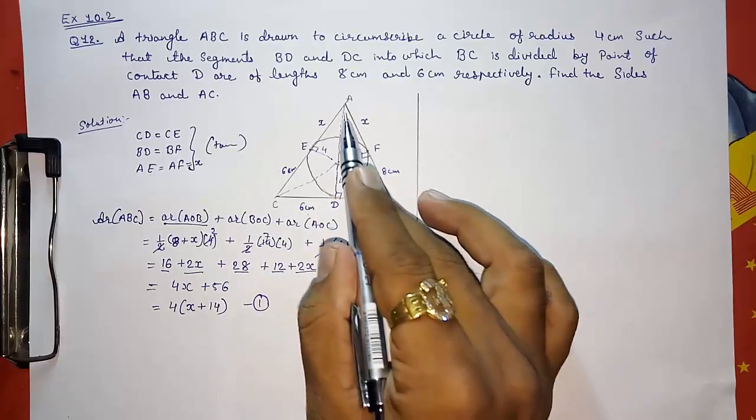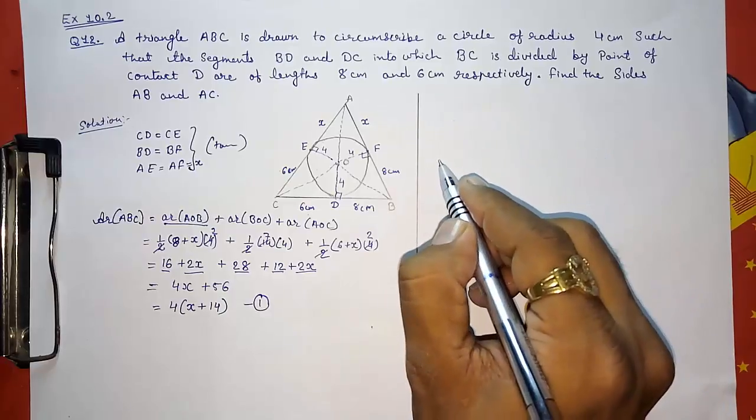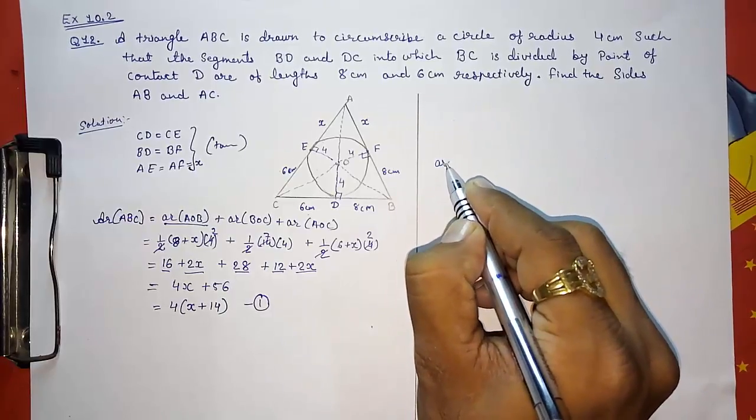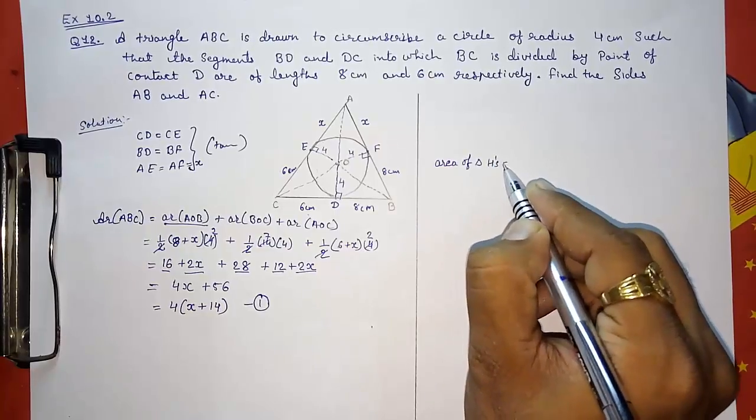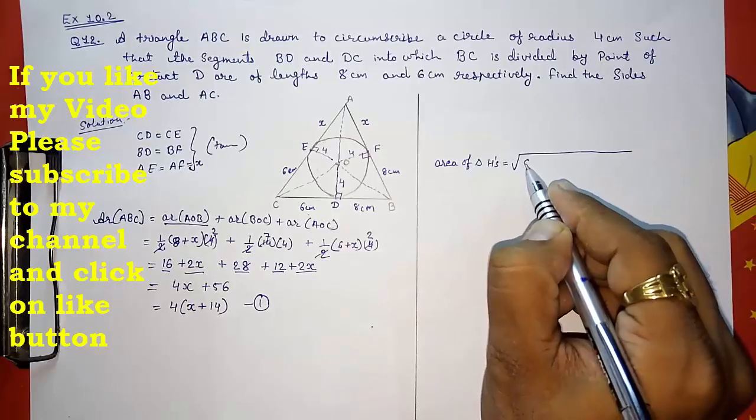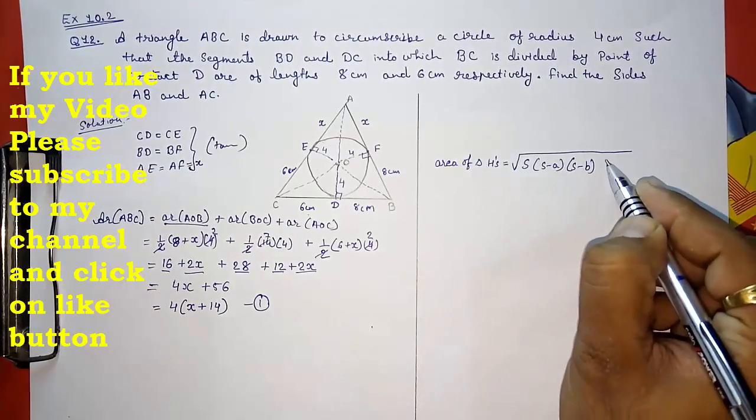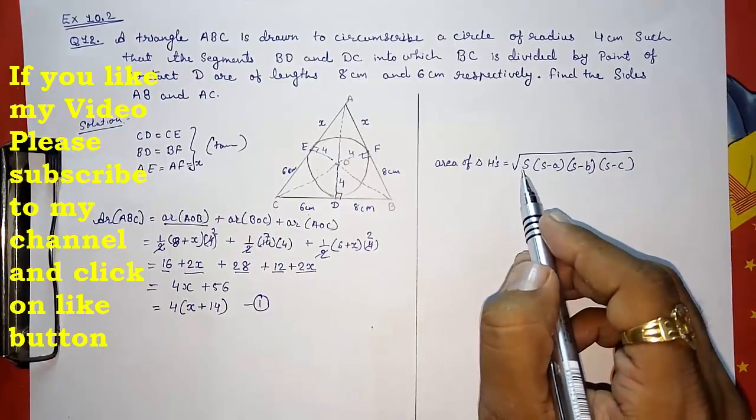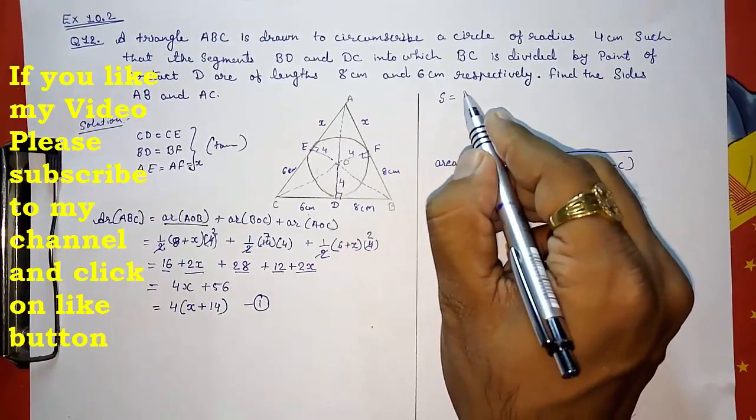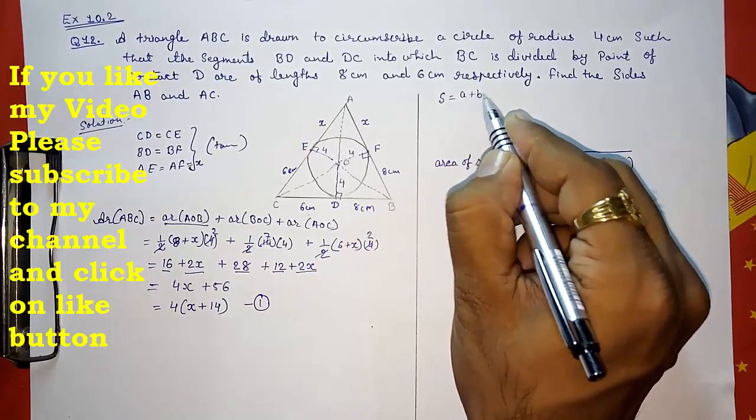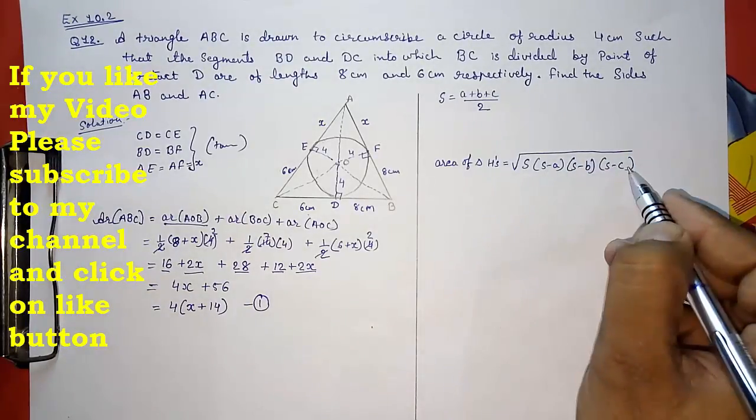Now we are going to find the area of this triangle by Heron's formula. And we know what is Heron's formula. Area of triangle by Heron's is equal to under root S into (S minus A) into (S minus B) into (S minus C). What is S? S means the semi-perimeter. Semi-perimeter means sum of all the 3 sides divided by 2: (A plus B plus C) by 2. And A, B, and C means the sides.